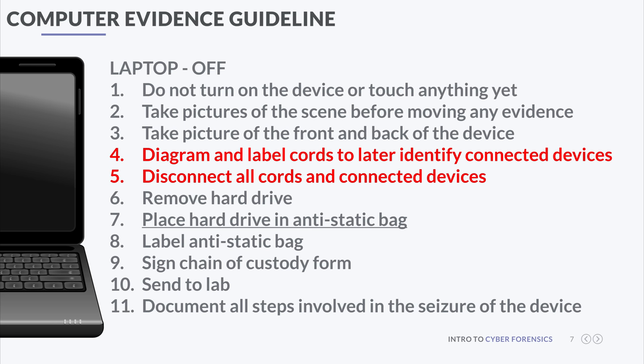When you get to a crime scene and secure it, you may face situations where the computer is off or on. In the past, we were told to unplug the computer from the back of the machine — not from the wall — so you know exactly what you're unplugging. Now things have changed: if the hard drive is fully encrypted, you might have to acquire memory. If the computer is off, document it as much as possible and follow a proper procedure.